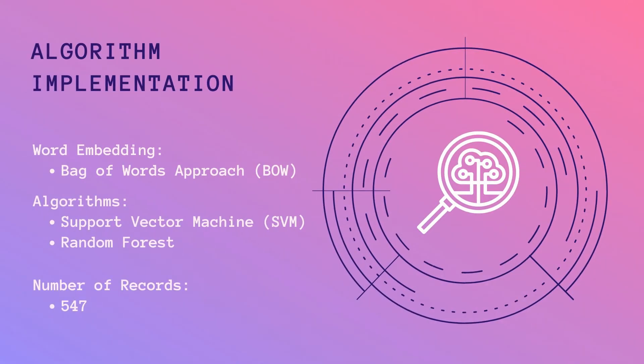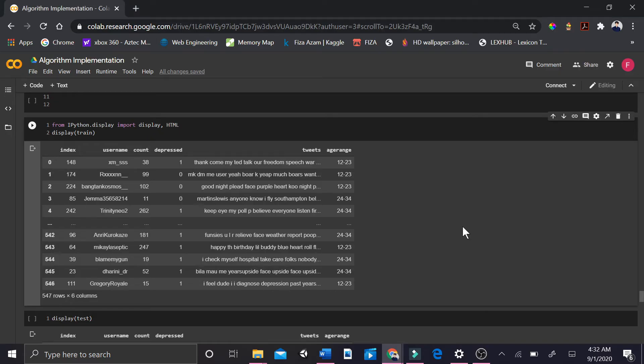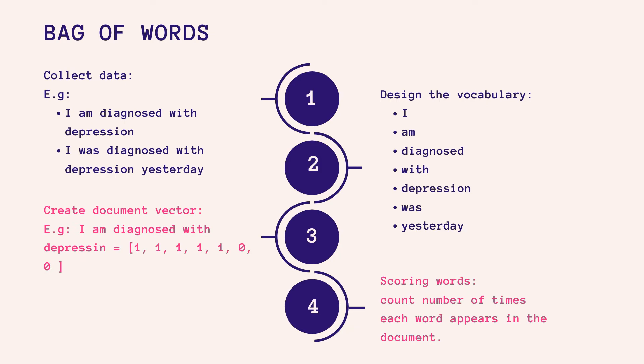Algorithm implementation: we opted for the bag-of-words embedding approach, then selected support vector machine and random forest algorithms. We fed 547 records of our training set to both algorithms. Machine learning algorithms cannot work with raw text directly — the text must be converted into vectors of numbers. Therefore, we quantified depression through word frequencies using bag-of-words, which involves: data collection, designing the vocabulary, creating a document vector whose length matches the vocabulary size, and scoring words.